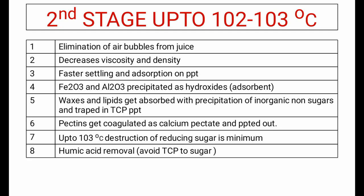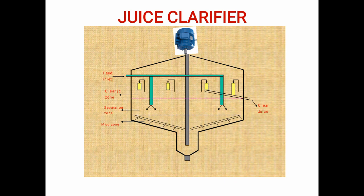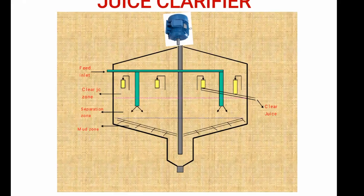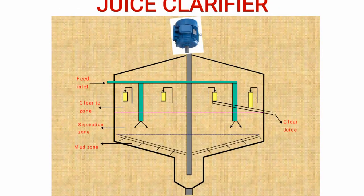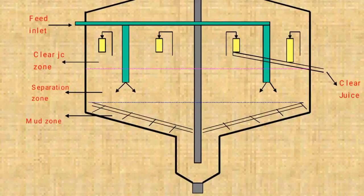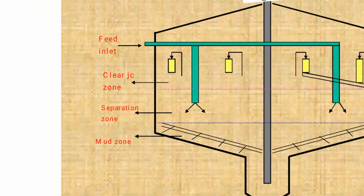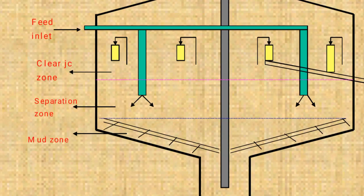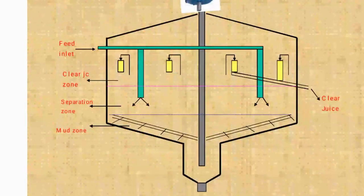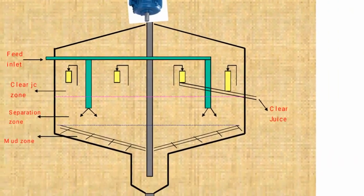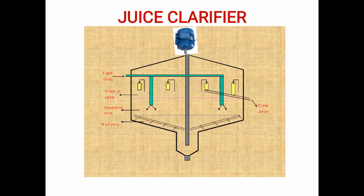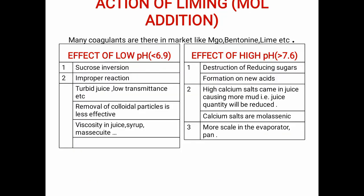If humic acid is present, the color of the sugar will increase. This is a typical short clarifier — many kinds of clarifiers are present in factories. The juice is passed in and goes to the bottom, where separation occurs. The bottom zone is the mud zone where mud is removed, and the clear juice comes out from the top.